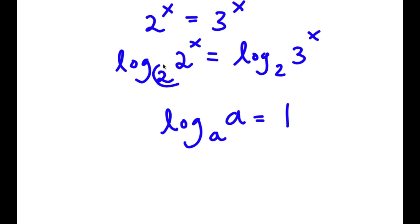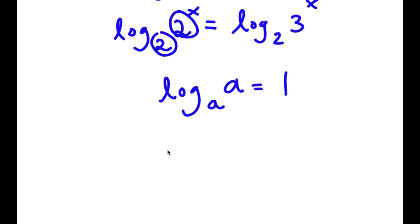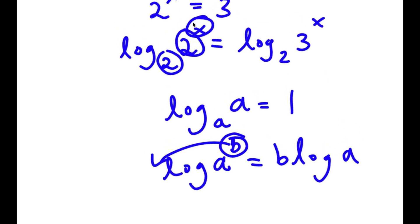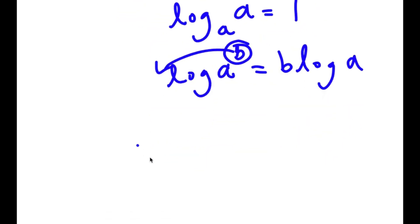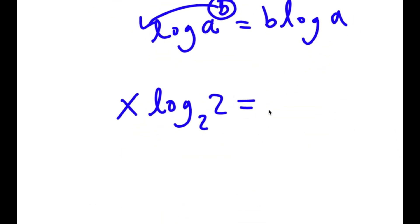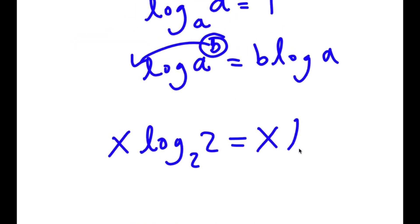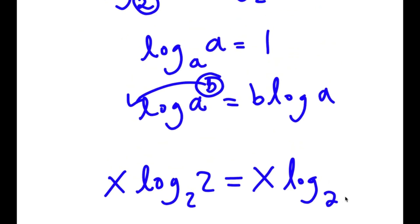As you see here, we have log base 2 of 2. But before I cancel these out, if I have something in the form log base a of b to the power of b, I can move the exponent b to the front, so it equals b times log a. In this case, x is my exponent, so I can move it to the front. So now I have x times log base 2 of 2 is equal to x times log base 2 of 3.